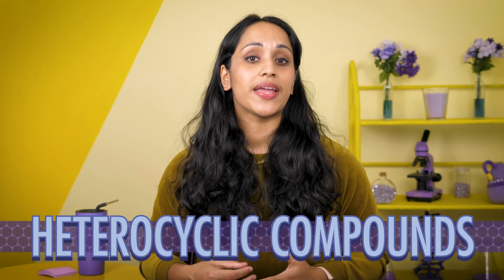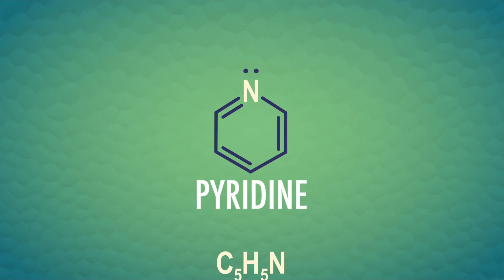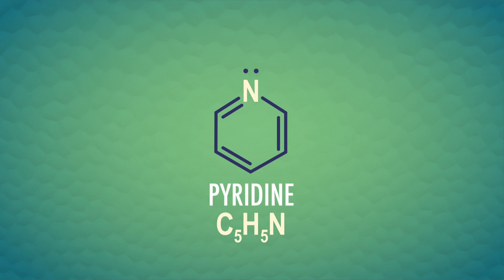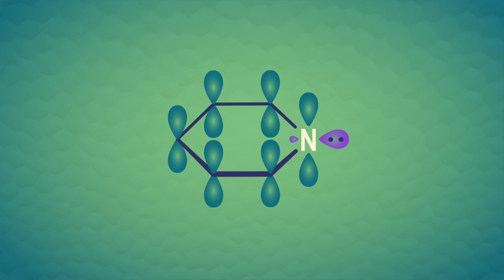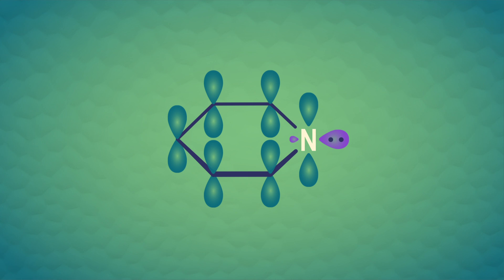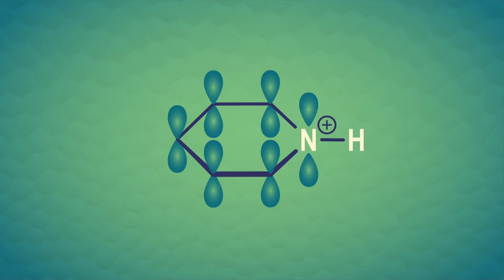We also have heterocyclic compounds with aromaticity, which are rings that include an atom other than carbon. For example, pyridine is C5H5N. It's cyclic, planar, and has 6 delocalized pi electrons, one of which is coming from the nitrogen. So it's aromatic. Nitrogen also has a lone pair in an sp2 orbital, but it's in the same plane as the sigma bonds — the meat part of the molecule burger. Because of the trigonal planar geometry, the lone pair of electrons can't be delocalized into the ring, and this lone pair is available to accept a proton, which is why we'll see pyridine used as a base in some organic reactions.